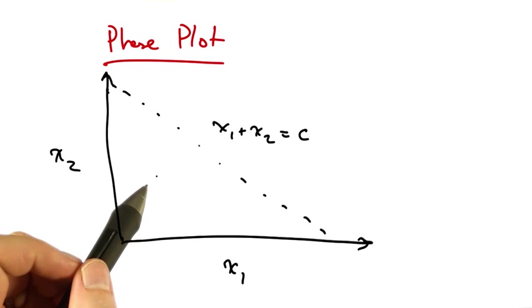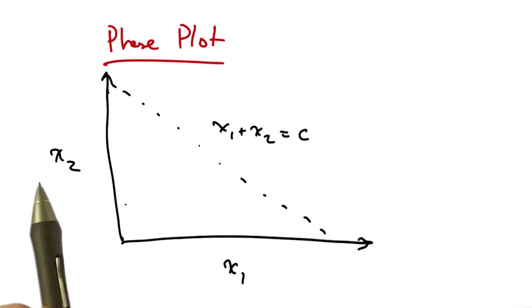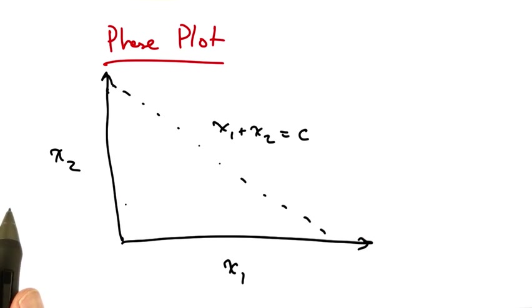We can represent fairness and efficiency in terms of a phase plot, where each axis represents a particular user or a particular sender's allocation. In this case, we just have two users, one and two, and we represent their allocations with x1 and x2.